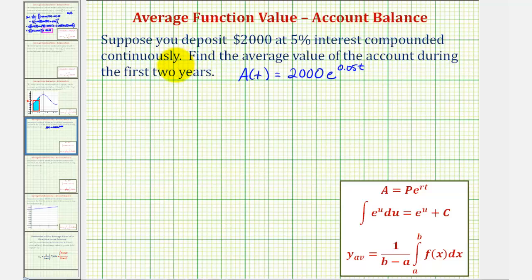And now to find the average value of the account during the first two years, or over the closed interval from 0 to 2, we'll use the formula given here below, where y sub av, or the average value over the closed interval from a to b, is equal to 1 divided by the quantity b minus a times the definite integral of f of x from a to b.